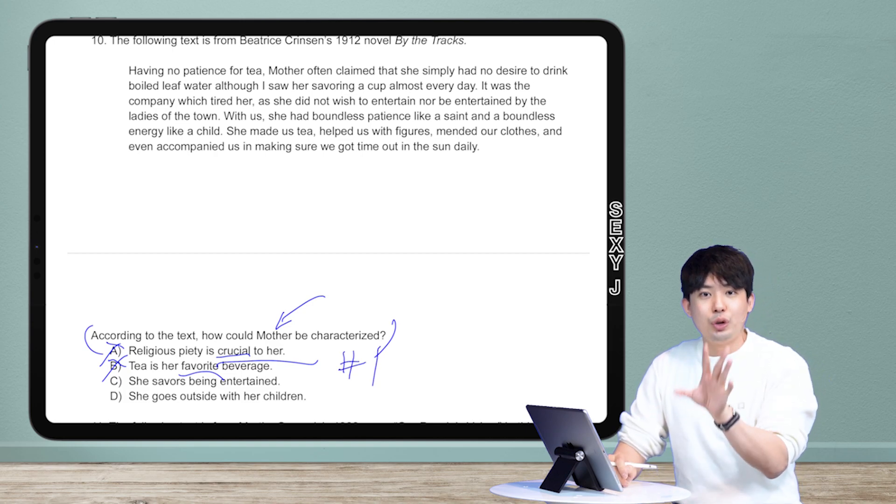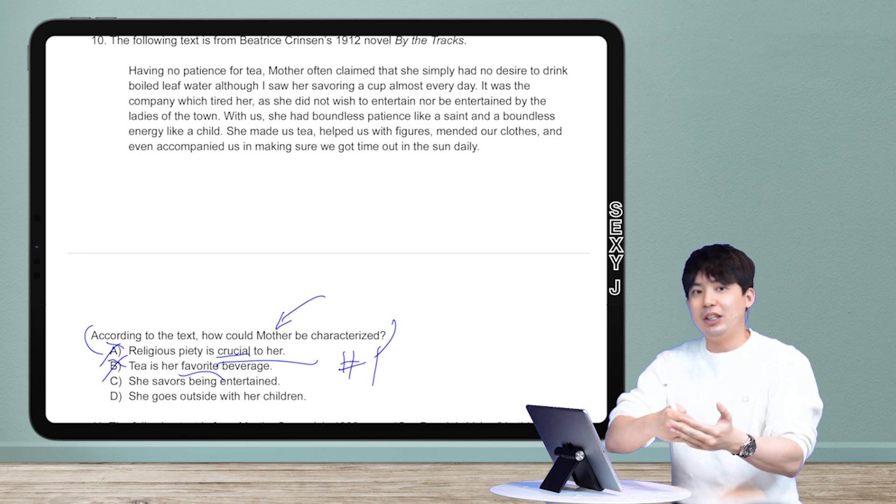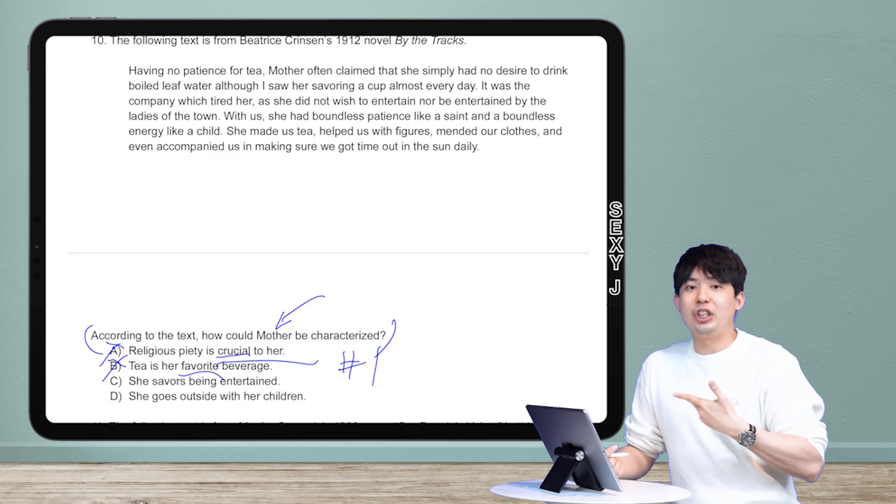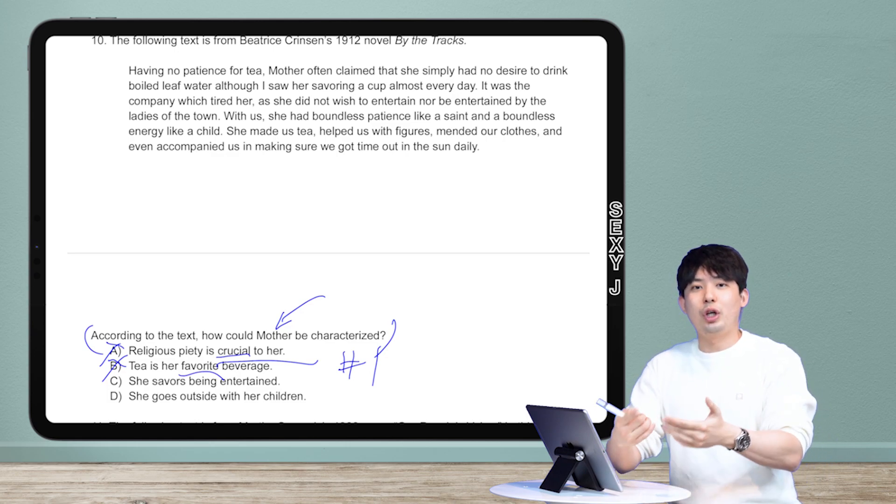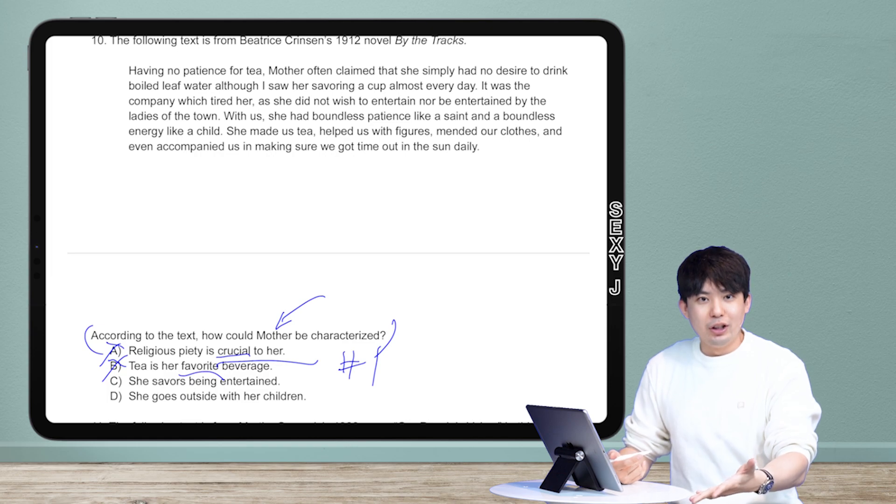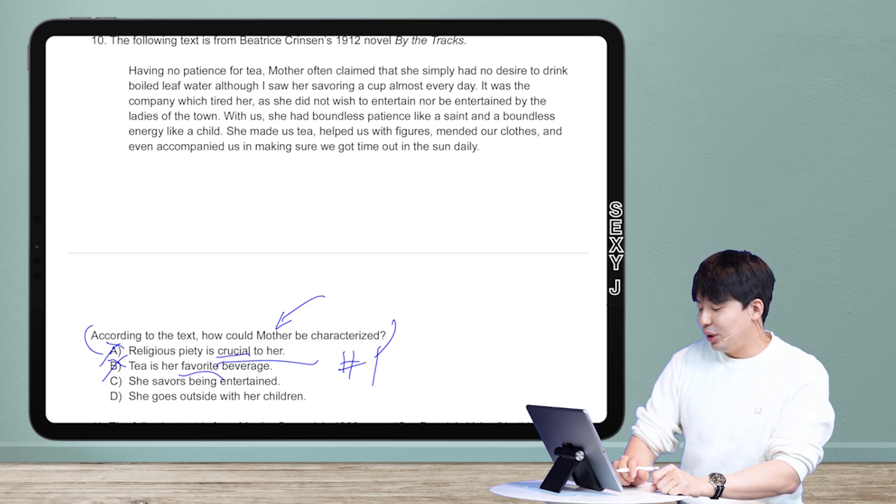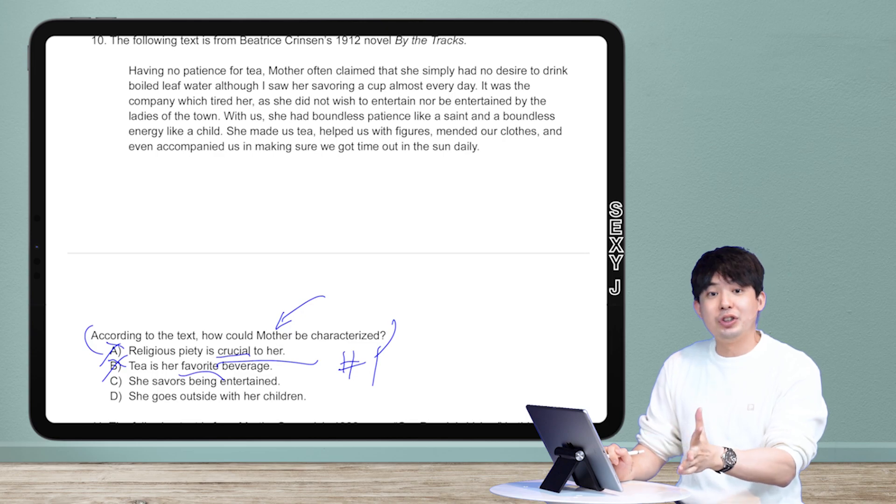As you guys know, what is a super super common trap or tactic they put in? Something that is a more extreme version of what was in the text. So could it be that she likes tea? Sure. Could you say that tea is my favorite beverage even if you saw me drinking tea every day for let's say a week? Probably not because I actually prefer beer and you guys just probably wouldn't catch me drinking beer because you guys should be studying.